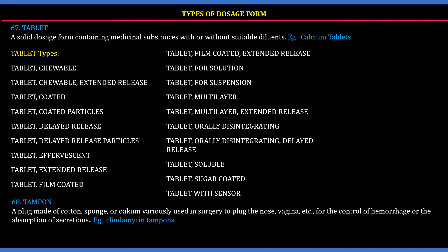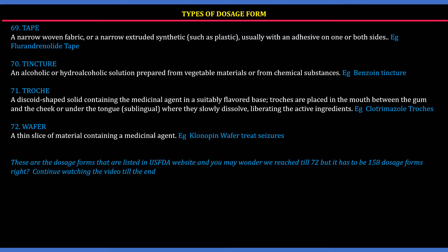68. Tampon: A plug made of cotton or sponge used in surgery to plug the nose, vagina, etc. for the control of hemorrhage or absorption of secretions. Example: clindamycin tampons. 69. Tape: A narrow fabric or extruded synthetic with a drug adhesive on one or both sides. Example: flurandrenolide tape.